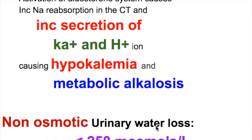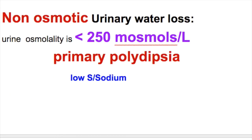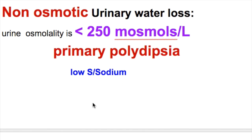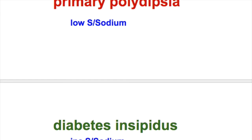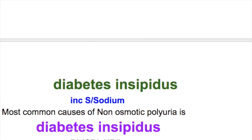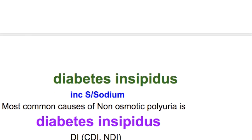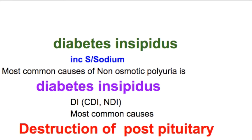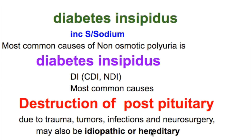Non-osmotic urinary loss occurs when urine osmolality is less than 250 milliosmols per liter, and occurs in primary polydipsia or diabetes insipidus. In primary polydipsia there is low serum sodium, whereas in diabetes insipidus there is increased serum sodium. The most common cause of non-osmotic polyuria is diabetes insipidus — both central and nephrogenic — most commonly caused by destruction of the posterior pituitary due to trauma, tumor, infection, or neurosurgery, but it may also be idiopathic or hereditary.